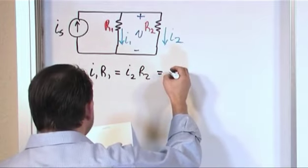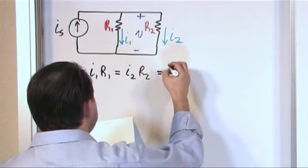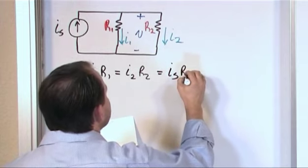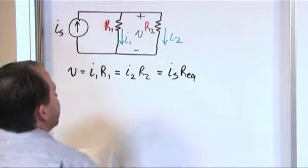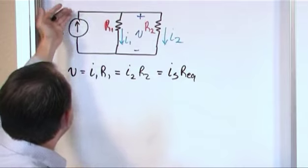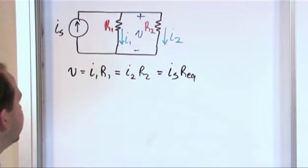So it would be, if we did it that way, it would be I source times the equivalent resistance of these two resistors. In other words, if we combined resistances here, we have a single resistor fed by I sub S. The voltage across it would be I sub S times the equivalent resistance, IR.